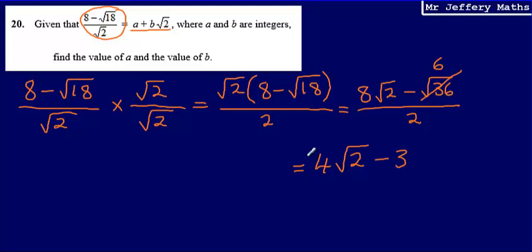So I've rationalized the denominator and I've simplified it, and I'm left with 4 root 2 minus 3. Now I'm asked to write this in the form a plus b root 2. So this is nearly there. I just need to swap over this minus 3 and put it in the front. So this is minus 3 plus 4 root 2.